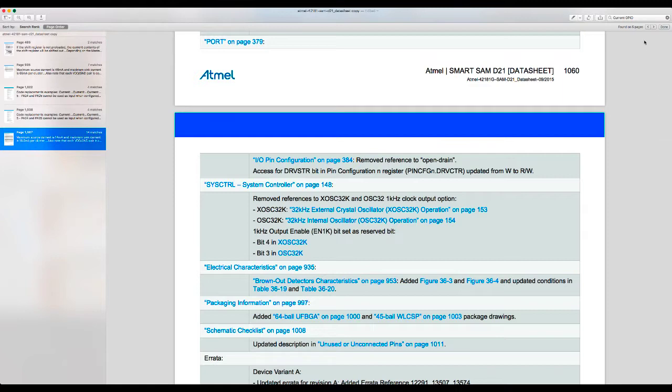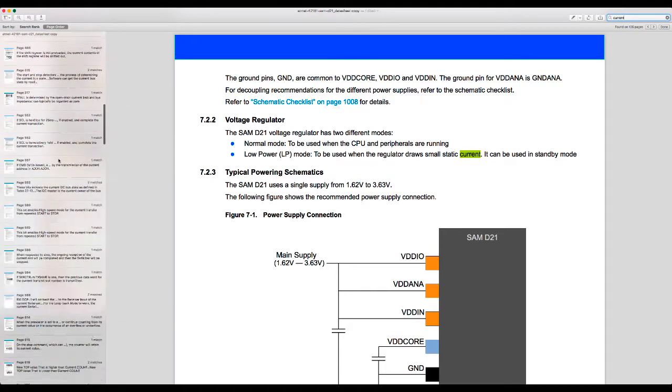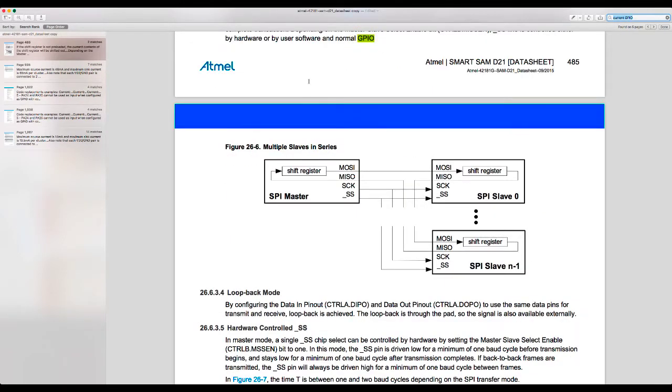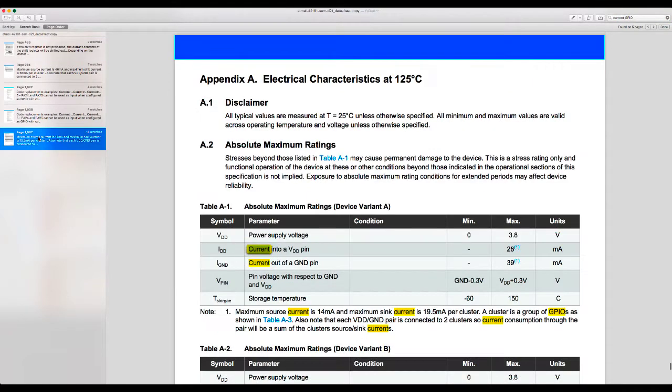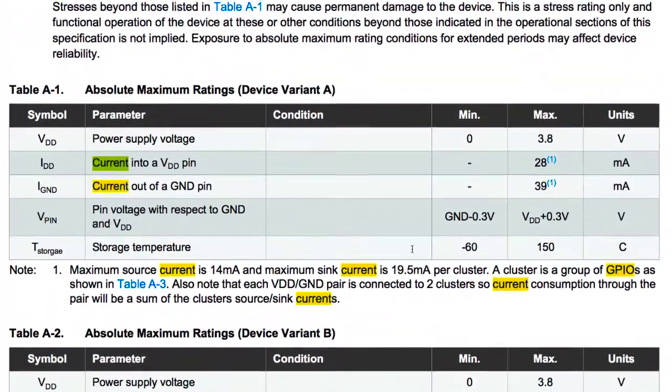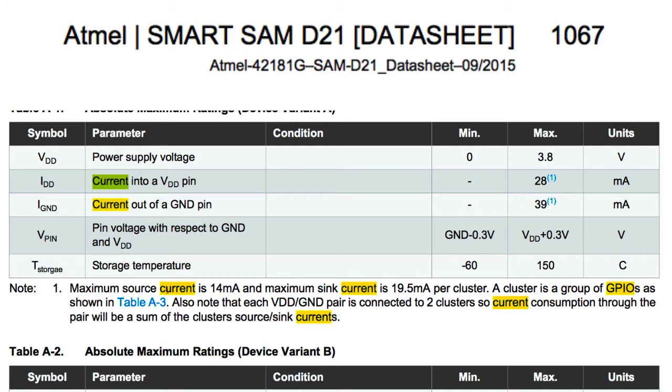So I wanted to find out something about current capabilities, so I opened up the data sheet and searched for current. And that gave me a whole lot of choices over here. Eventually I decided I'd try searching for current and GPIO pins and see what that found me. And that got me a more limited selection. Eventually, on page 1067, I found this stuff about electrical characteristics. And I'm interested in device variant A here. And that tells me that some absolute limits on supply, but it also tells me that the maximum source current is about 14 milliamps per cluster. And a cluster is a group of output pins, as shown in table A3.